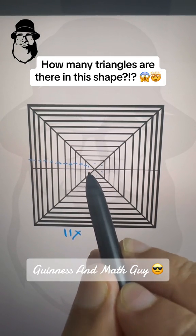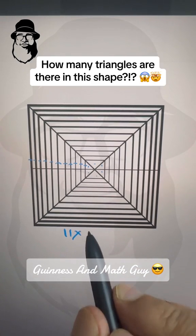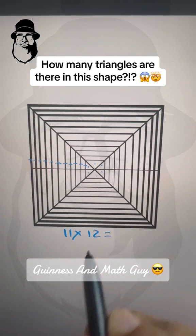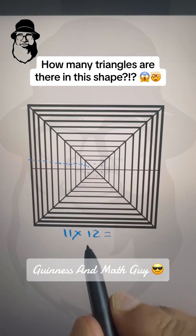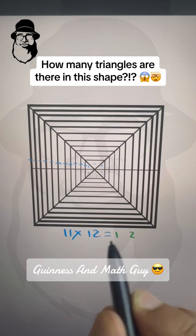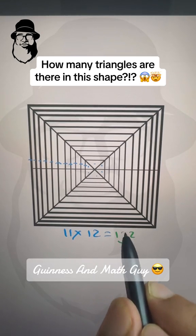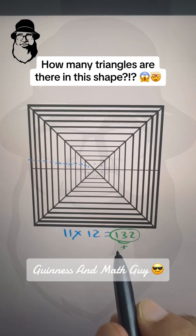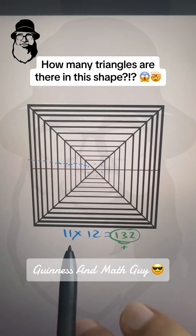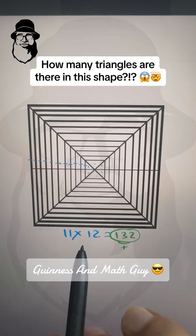So 11 times 1, 2, 3, 4, 5, 6, and double of 6 is 12. So 11 times 12. And we know the 11 times trick. We write 1 and 2 as it is and add them to get 3. 132 is the answer. In this shape, there are 132 triangles.